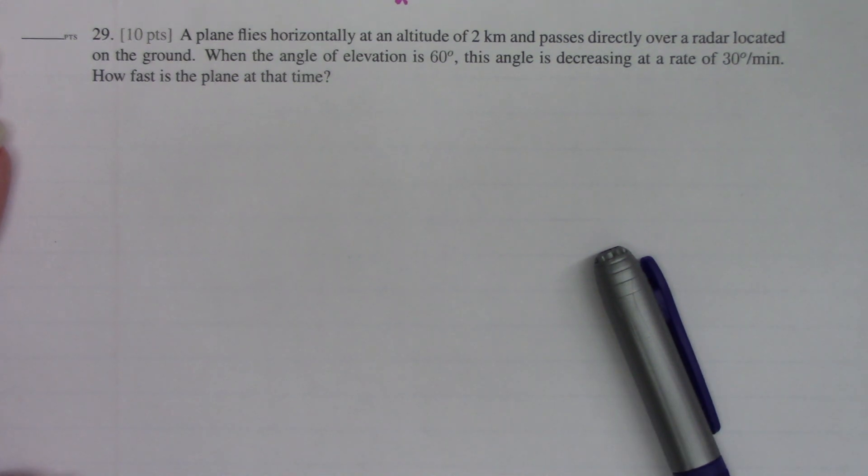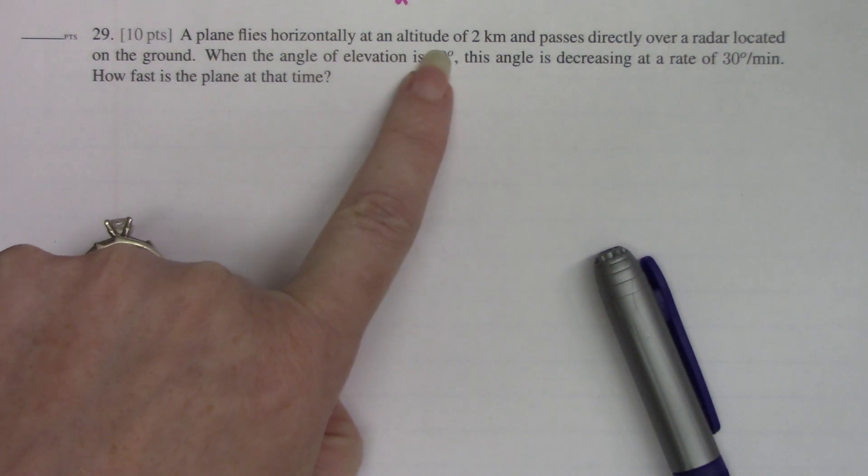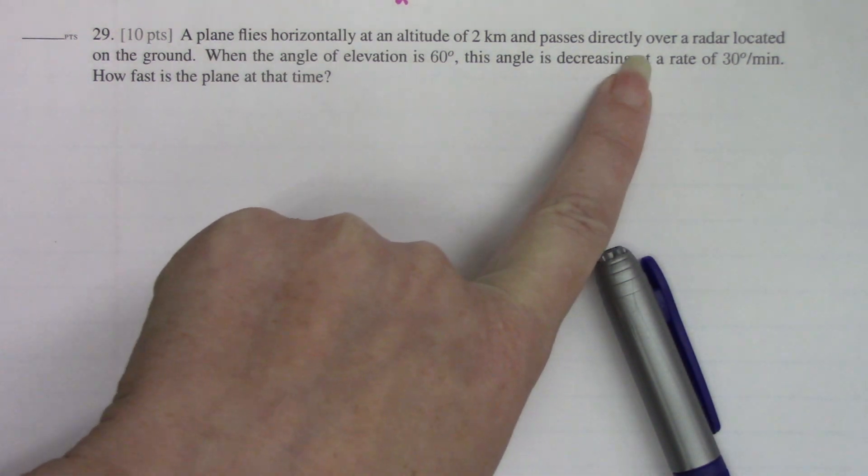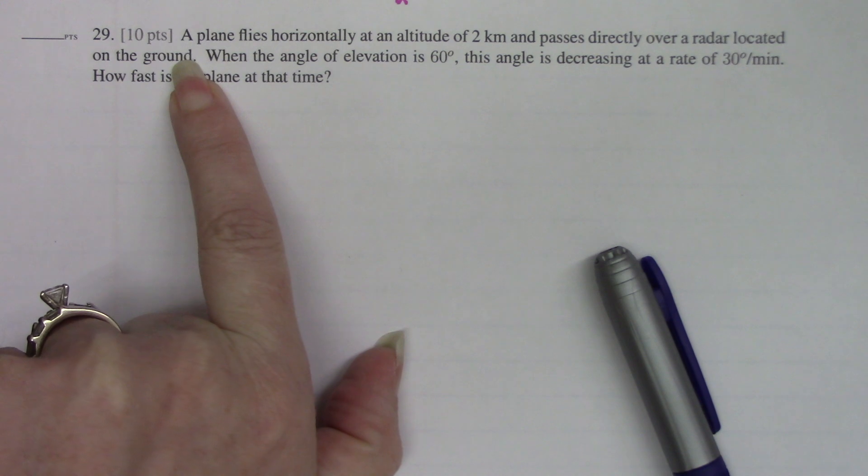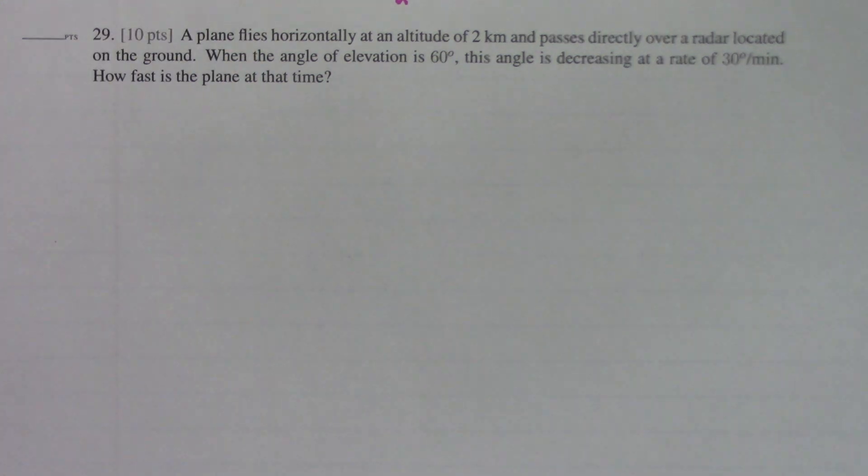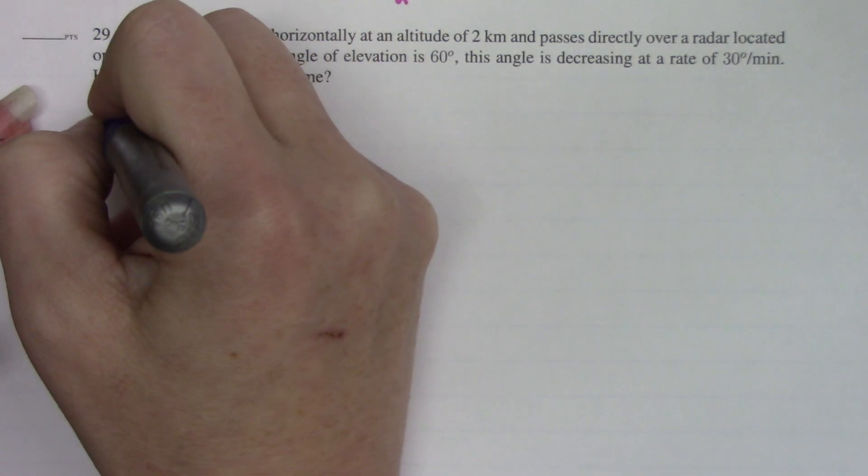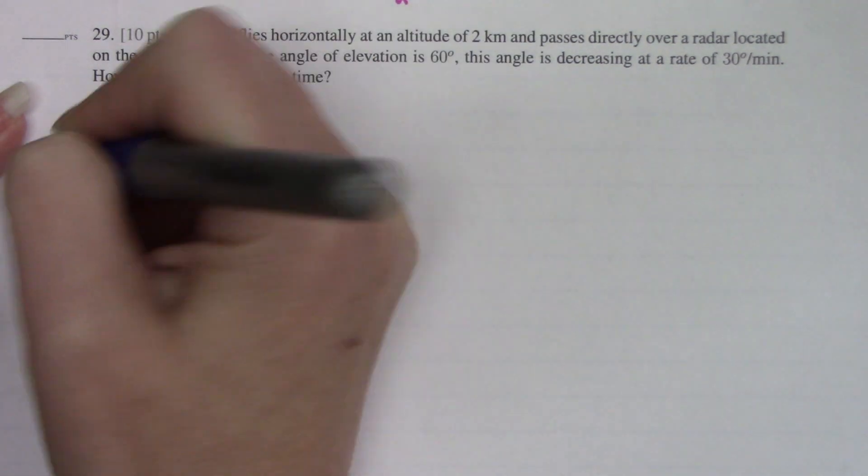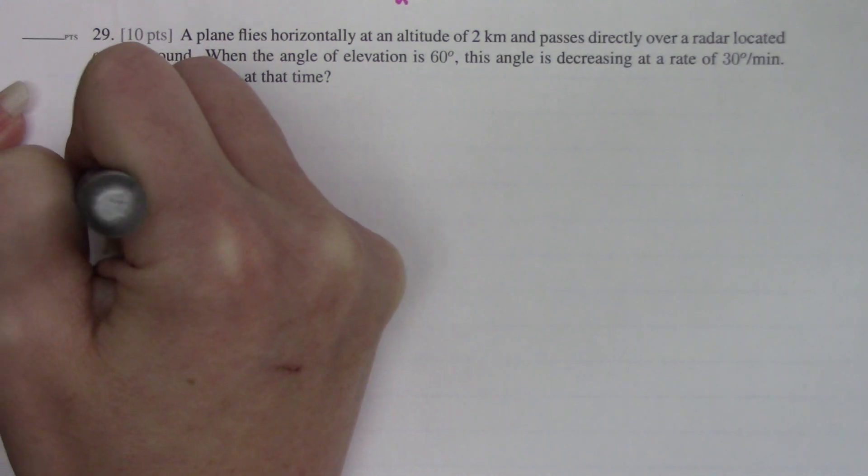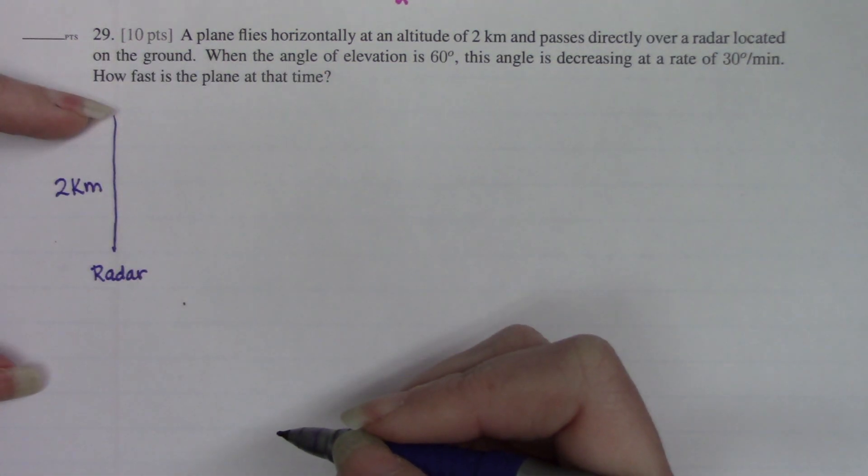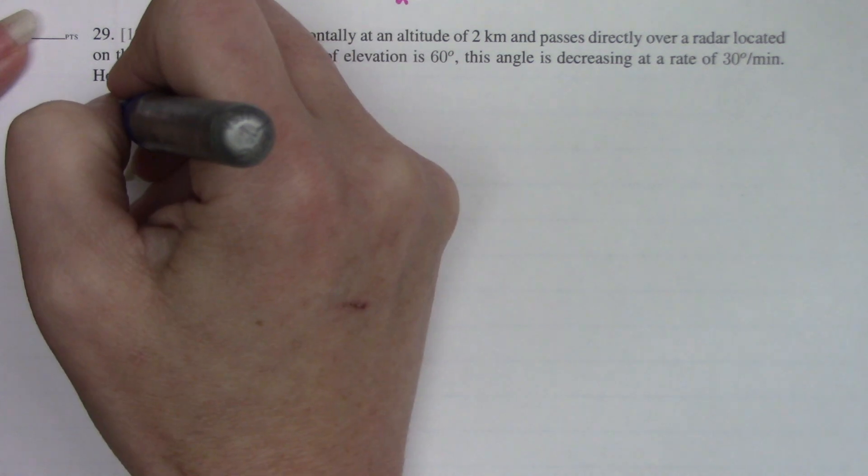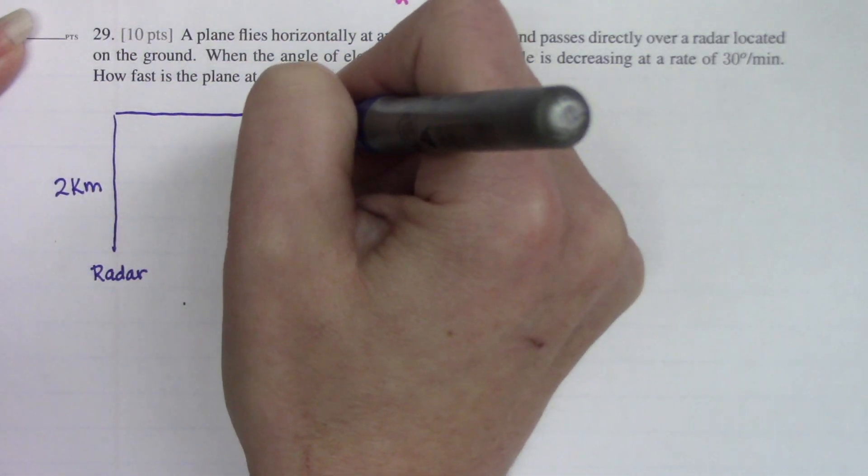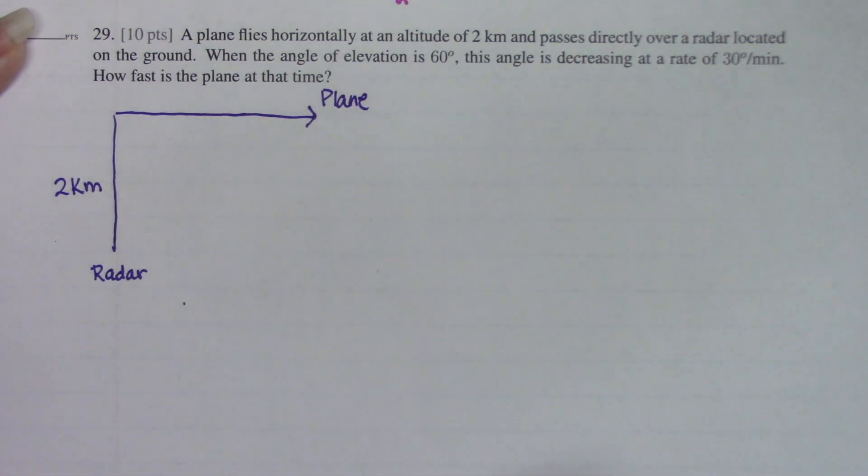All right, problem 29. A plane flies horizontally at an altitude of 2 kilometers and passes directly over a radar located on the ground. I'm going to pause right there and say that I have a radar station and 2 kilometers up. There's a plane flying.